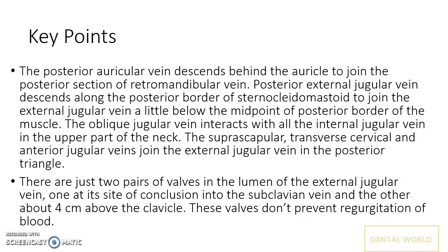The posterior triangle is a very important triangle because the EJV resides here. There are just two pairs of valves in the lumen of the EJV. The first valve is where it enters into the subclavian vein, and the second valve is about 4 cm above the clavicle. These valves do not prevent regurgitation of blood.